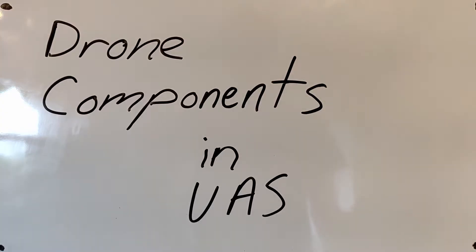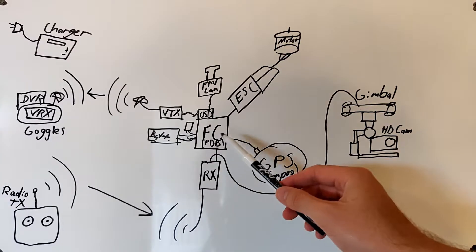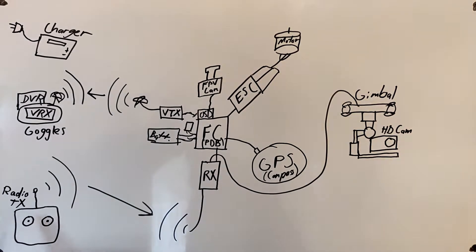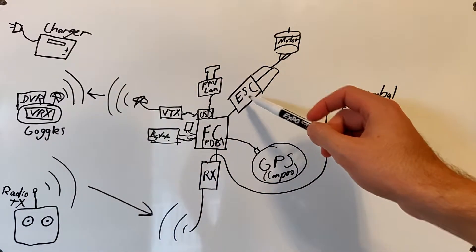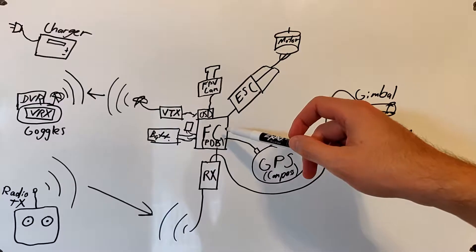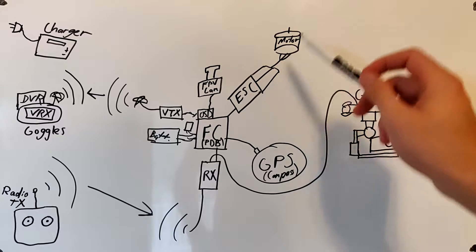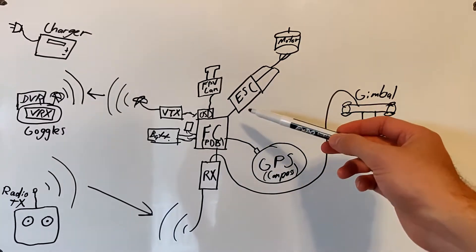Now let's look at the drone components in the unmanned aerial system. The flight controller is the brain of the drone. It keeps it in the air and also talks to other components. The radio transmitter or the remote control will send our commands from here over to our receiver abbreviated as RX and that will tell the receiver will tell the flight controller what we want to do. The electronic speed controller or ESC takes the signal from the flight controller and tells the motor how fast to spin. There are four ESCs and motors on a quadcopter but for simplicity I'm only drawing one.